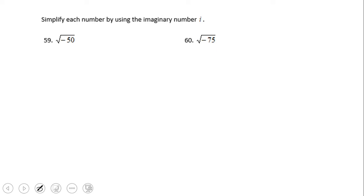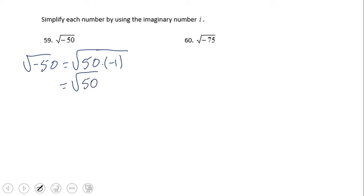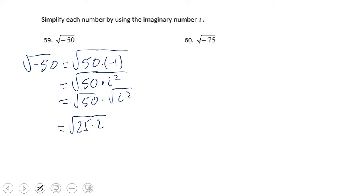Now let's look at how we simplify the square root of negative 50. Pretty much the same process as before, with one minor difference: 50 is not a perfect square, but we can still simplify it — 25 times 2 equals 50. So we rewrite it using 25, and the square root of 25 gives us 5, leaving us with 5 times the square root of 2, along with the imaginary factor i.